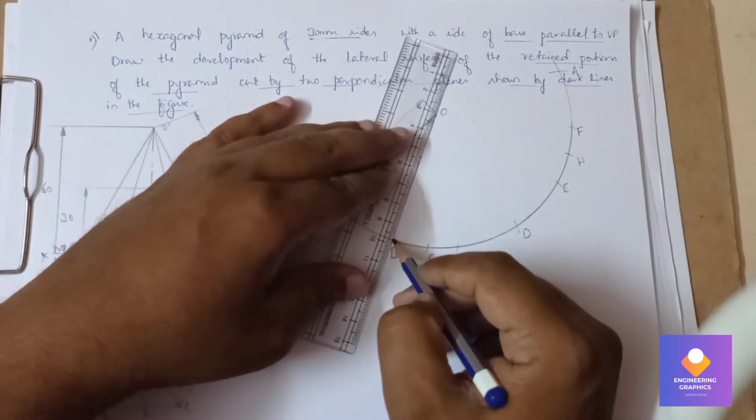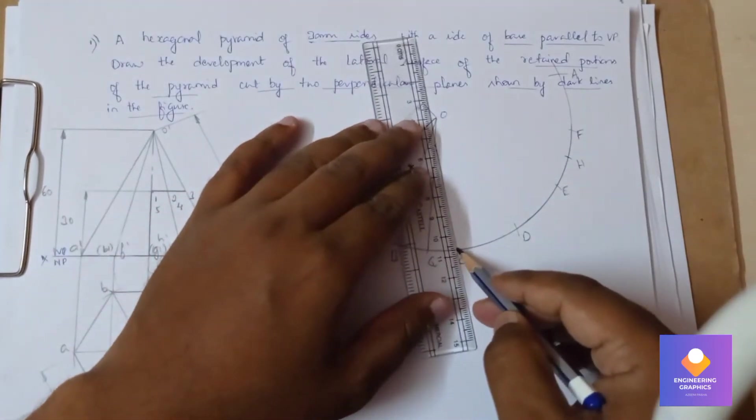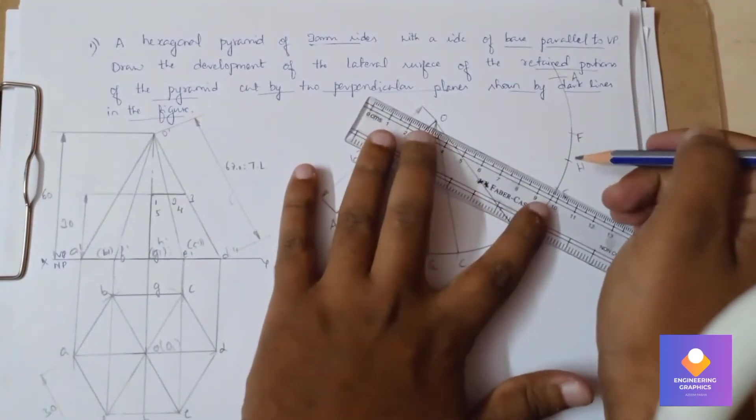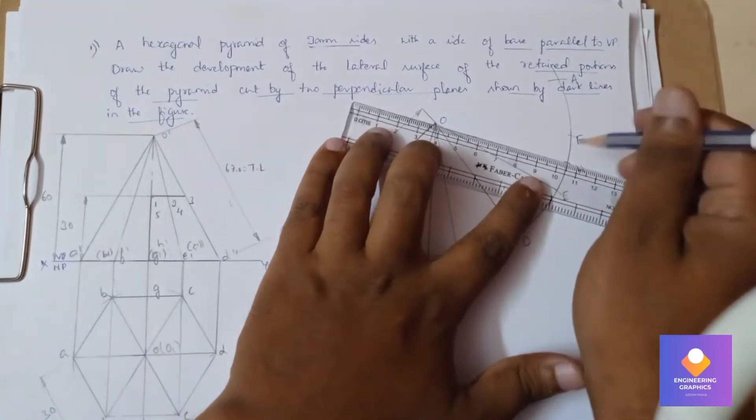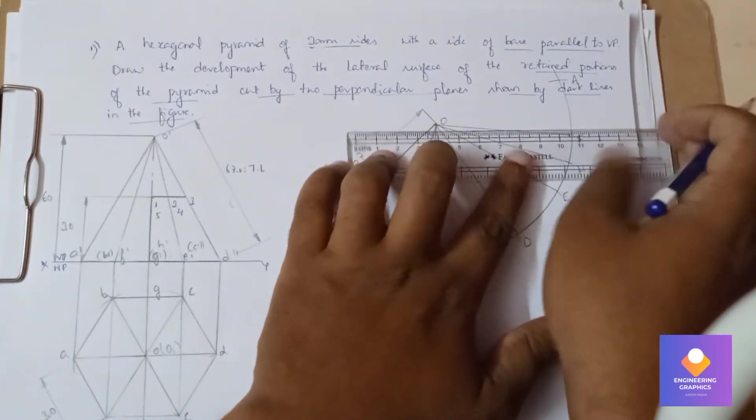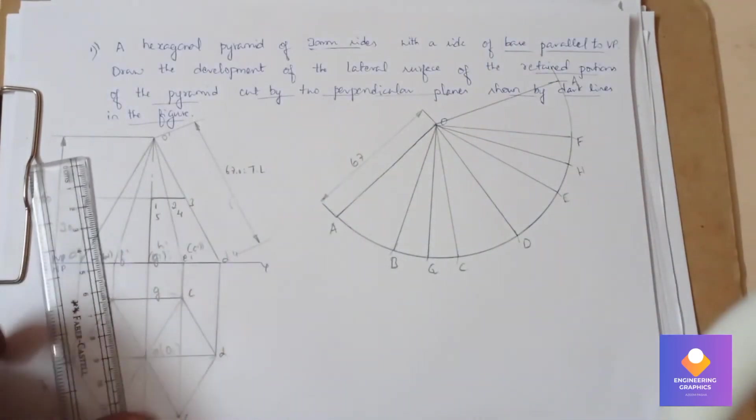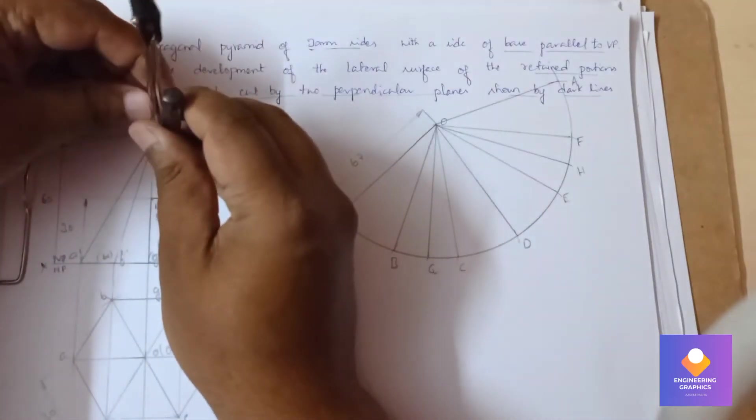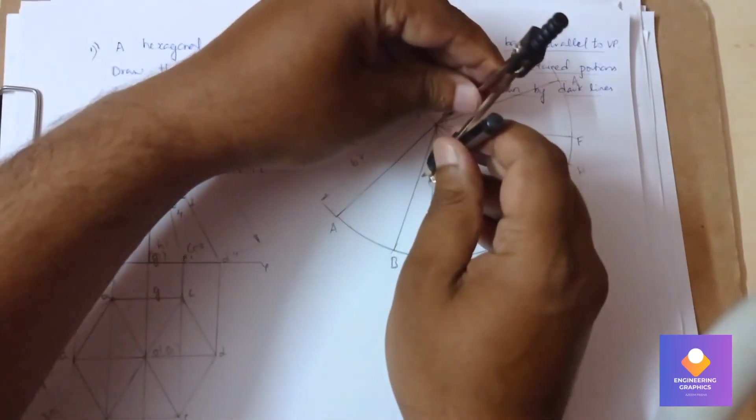Now you can join all these points with vertical lines. These are nothing but slant edges. We can see that all these lengths are of the same length. Arc points which have been cut, one, two, three, four, five, all are on the same length.